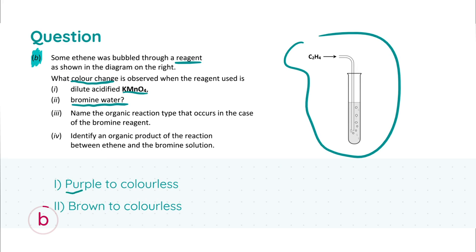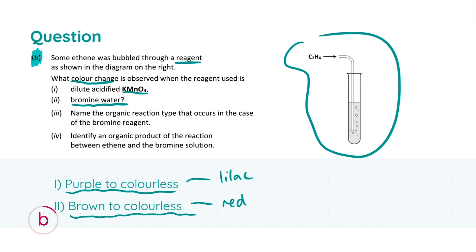For dilute acidified KMnO4, the color change is from purple to colorless — you could also say 'purple decolorizes.' Acceptable alternatives for purple include lilac, violet, or pink. For bromine water, it goes from brown to colorless — again, you could say it 'decolorizes.' Acceptable alternatives for brown include red, orange, or yellow. Make sure you get the order correct. There were three marks for each: three for the KMnO4 color change and three for the bromine water color change.